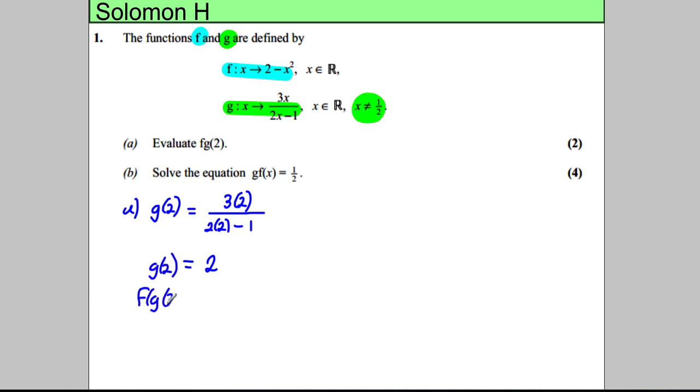Therefore, f of g of 2 is the same thing as f of 2—just putting 2 in. We put 2 into this function here, which is 2 subtract 2 squared, which is 2 subtract 4, which is negative 2. So f of g of 2 is equal to negative 2.